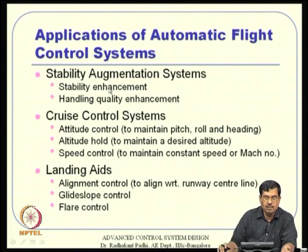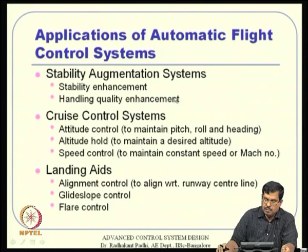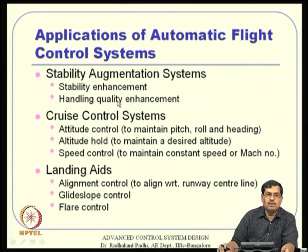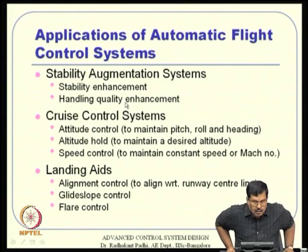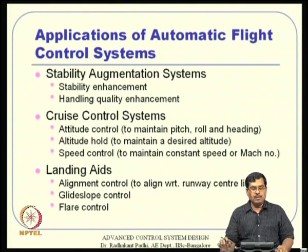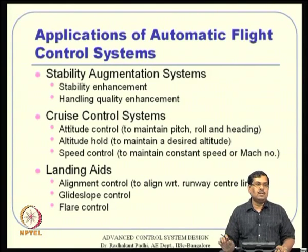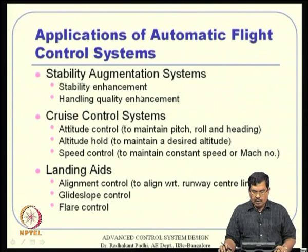Stability enhancement is used when the system is unstable or close to instability; we want to make it behave as a stable plant with the help of feedback. Handling quality refers to what the pilot perceives: if the response is too fast the pilot may get confused, and non-minimum phase behavior is also confusing. For tail-controlled flight vehicles, the closed-loop response can lead to non-minimum phase behavior that needs to be minimized. Handling quality also specifies settling time, percentage overshoot, and similar response characteristics.